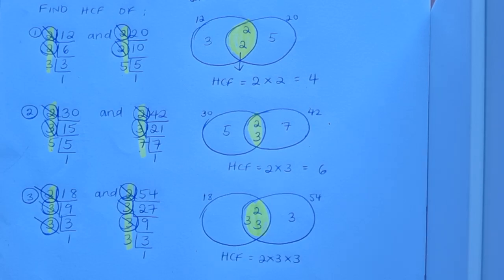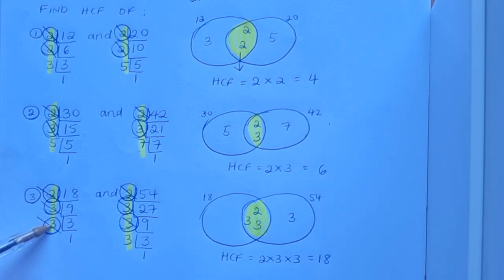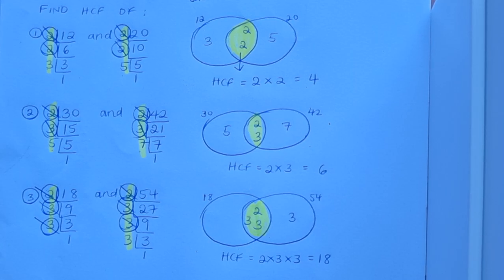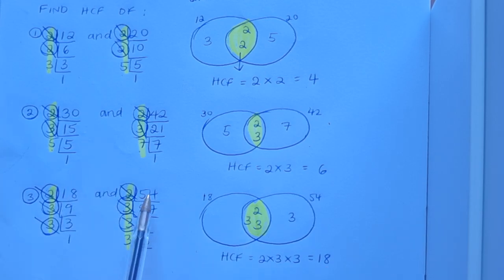2 by 3 by 3. And that makes 18. And I'm not surprised by that. Because if I look back to my prime factors of 18 they were 2 by 3 by 3. Sometimes that can happen. Sometimes one of the numbers that you start off with can be the highest common factor. And that's because 18 will go into 18 and it'll go into 54 as well. In fact we can tell that 18 goes into 54 three times.